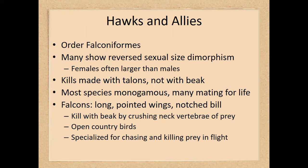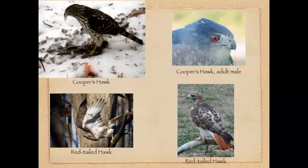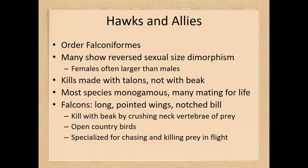The hawks include species you may have seen, specifically the red-tailed hawk. Hawks tend to show reversed sexual size dimorphism, with the female being larger than the male, likely related to the investment of creating eggs. Hawks kill with their talons — their claws — and cannot kill with their beaks. Some species are monogamous, mating for life. Falcons are different from hawks: they kill with their beak by crushing the neck vertebrae, and frequently kill prey in flight.